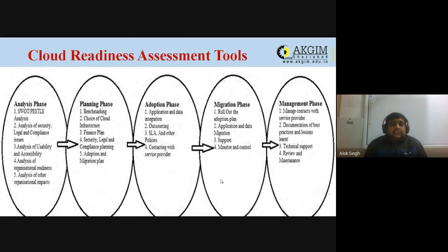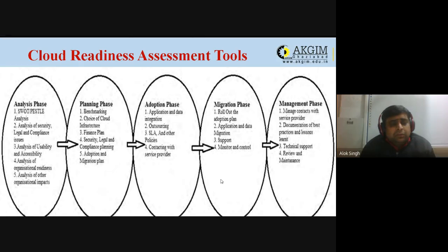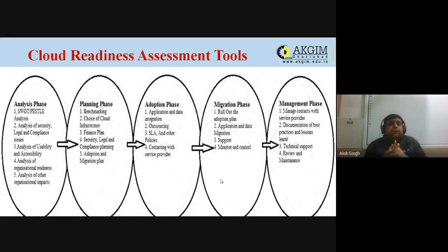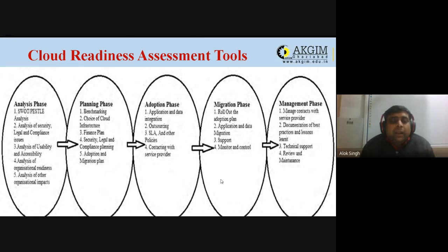Next is the finance plan — what are your budget constraints and the various overhead costs? You need to have a buffer amount and do your financial planning. Next is security, legal, and compliance planning — what is your plan for following security, legal, and compliance standards? Finally, the adoption and migration plan — how will you adopt and switch to the cloud-based environment? These are the tools for the planning phase.